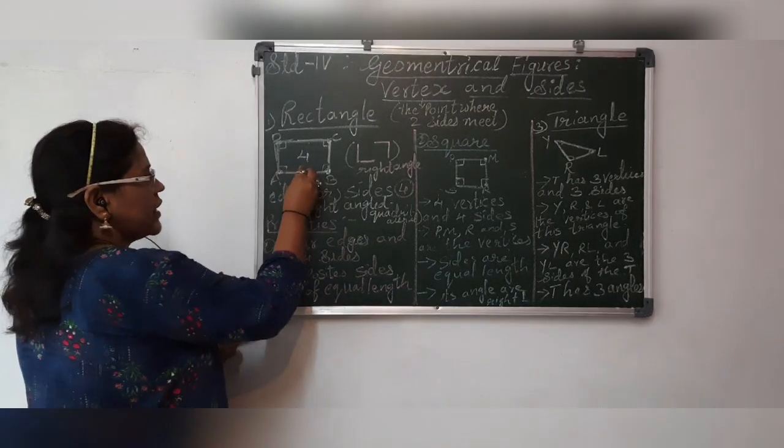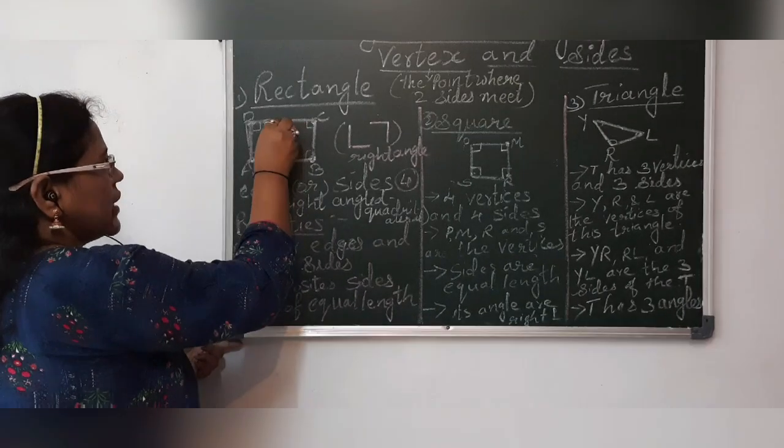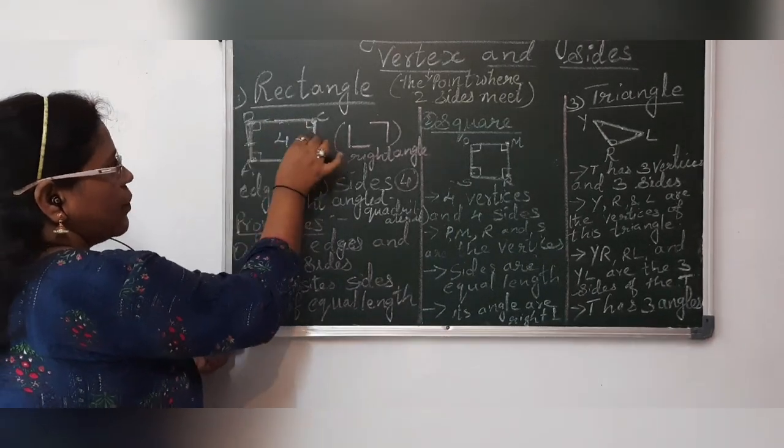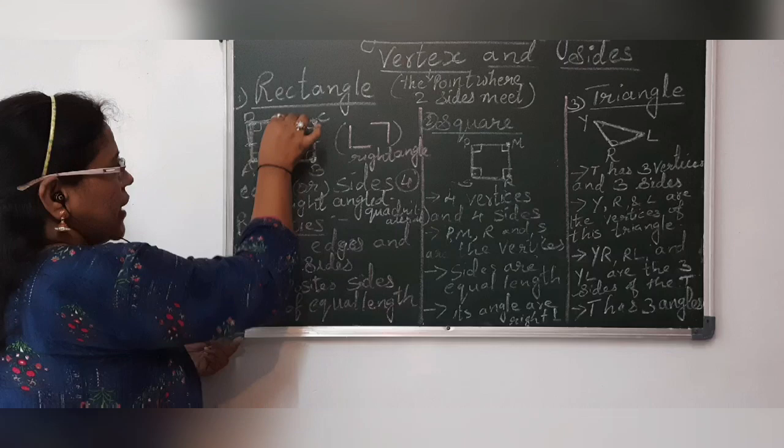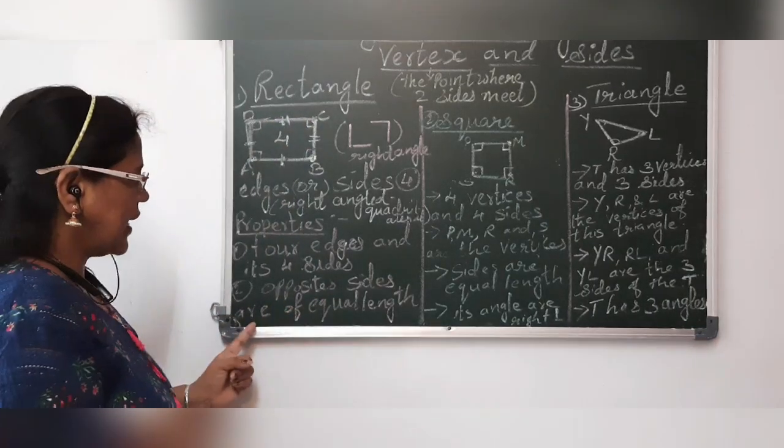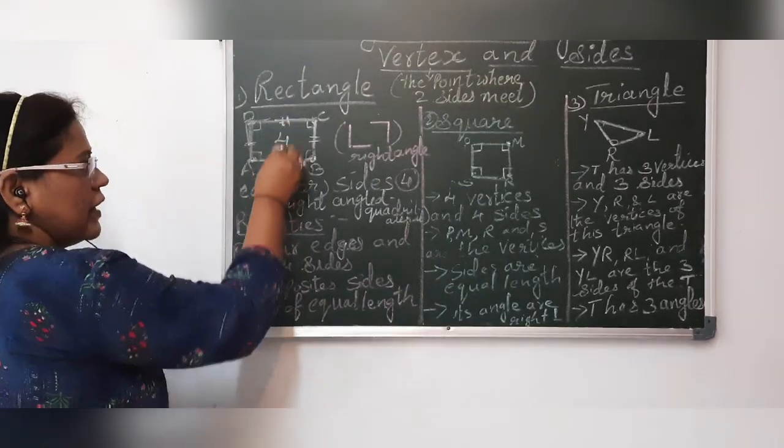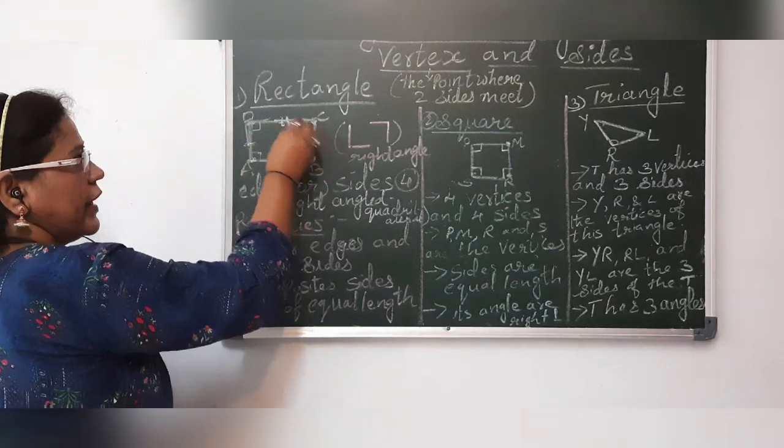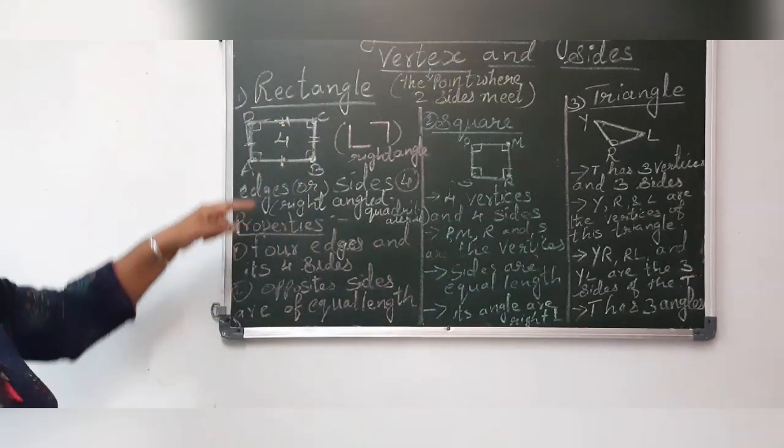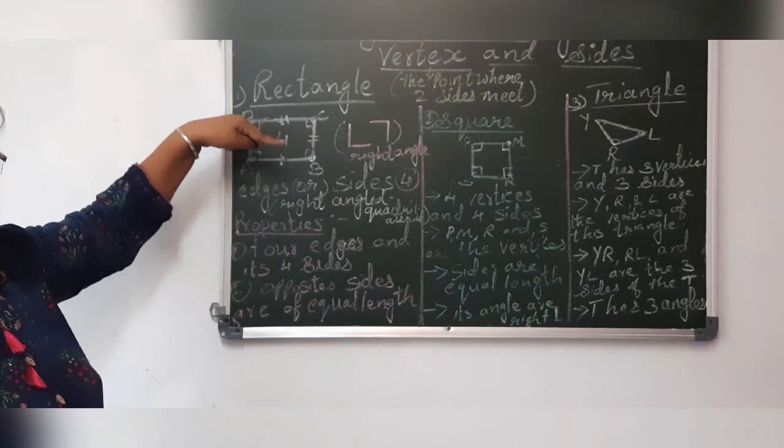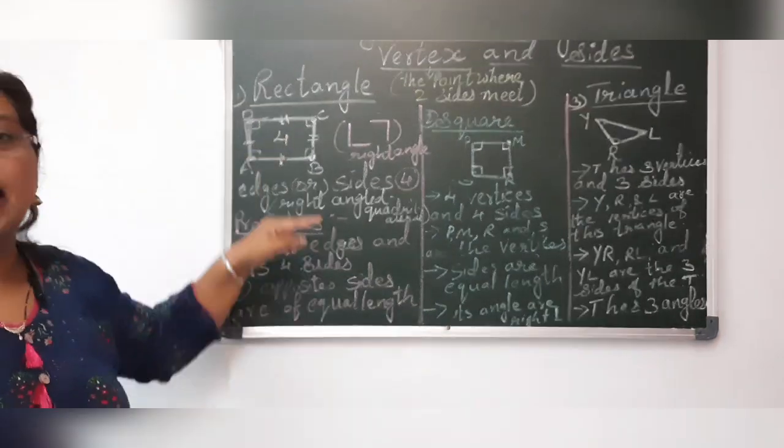And this rectangle is also known as or it is also called as right angled quadrilateral. Because its opposite sides are equal. Four edges and its four sides. So rectangle has four edges and four sides. Opposite sides. This side, opposite is this side. This side, opposite is this side. Can you see? So opposite sides are of equal length. Same length. Then only it is called as a rectangle.